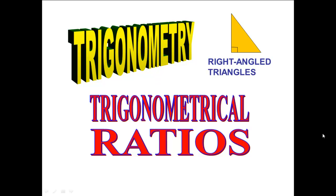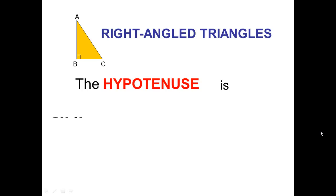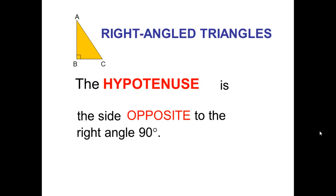In this lesson we are going to identify the opposite, adjacent, and hypotenuse of a right angle triangle to solve trigonometry ratios. In a right angle triangle we can always identify the hypotenuse — it is always the side opposite the 90 degree right angle. So in this case, the hypotenuse is AC, and it is opposite to the right angle.